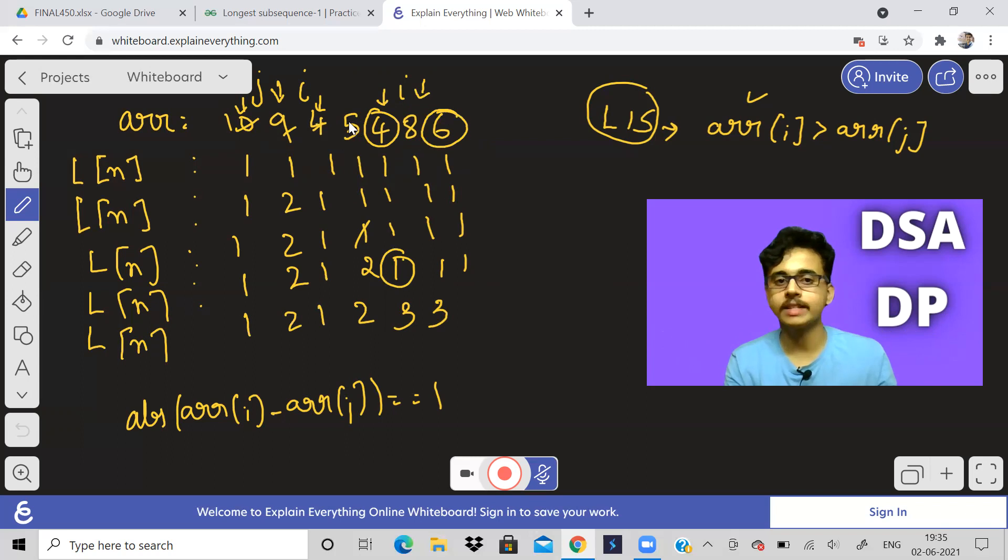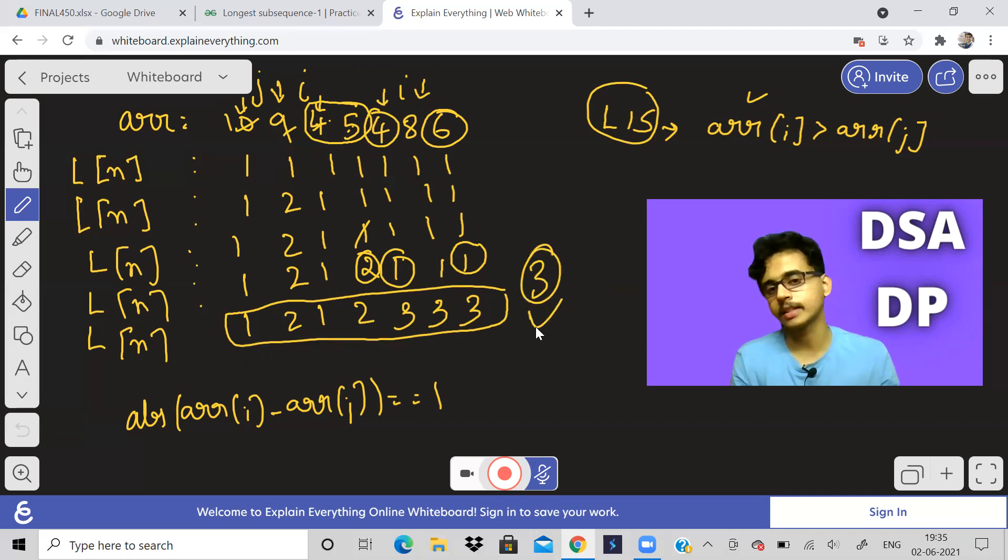What about six? See, before six, four, five is there. Now four, five, six can form a subsequence. So it will check with five. Six minus five is one. And LIS of I is one. LIS of J is two. So one or two plus one, three. So three. Then finally find out what is the maximum of all these elements. So it will be three. So answer is three. So this is how you solve the problem.